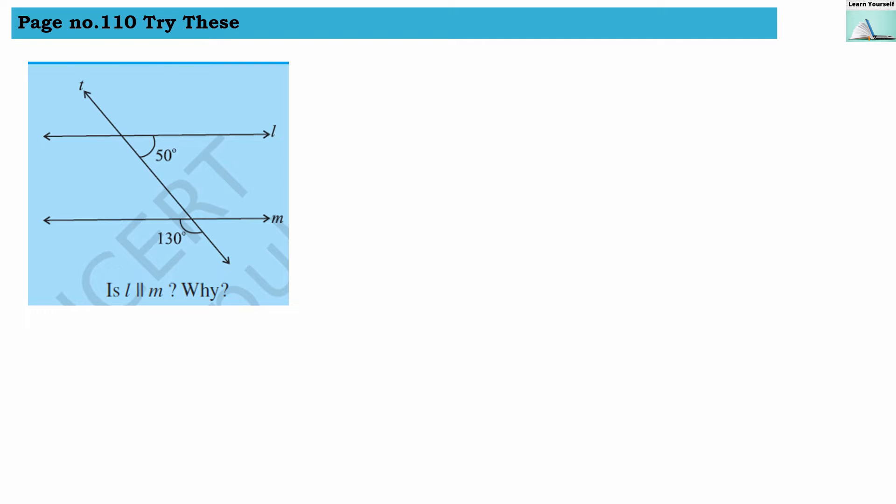Second example: line l and line m with transversal t. The first angle is 50 degrees and the second angle is 130 degrees. Now we have to answer: Is l parallel to m? Why? Let us find out the measure of this angle.